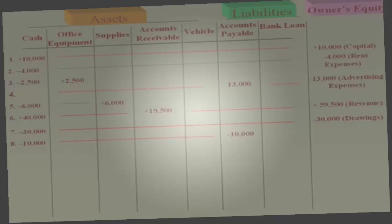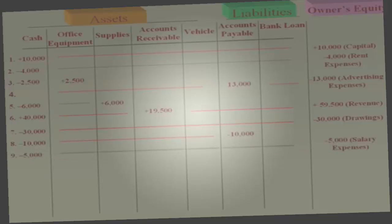Transaction 9: you paid employee salaries of $5,000. Cash goes down, and you have salaries expense. An expense is bad for equity. So cash goes down $5,000 and owner's equity goes down $5,000.